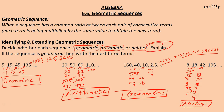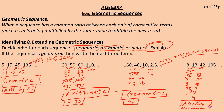An explanation for each could be as simple as: multiplying by 3 for the first sequence; adding 30 each time for the second; multiplying by one-fourth for the third; and either no common difference or common ratio for the fourth.